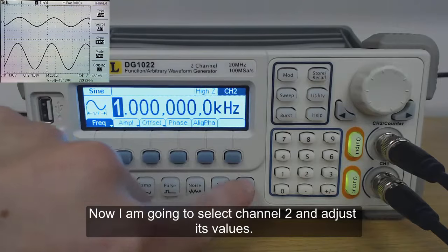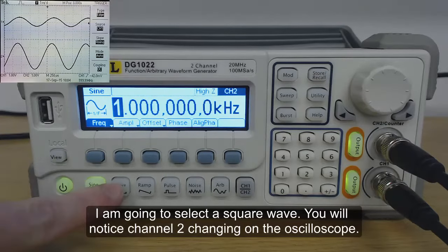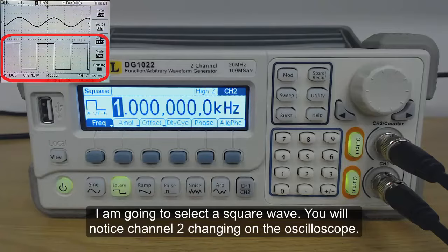Now I'm going to select channel 2 and adjust its values. I'm going to select the square wave. You will notice channel 2 changing on the oscilloscope.